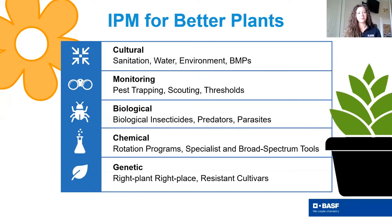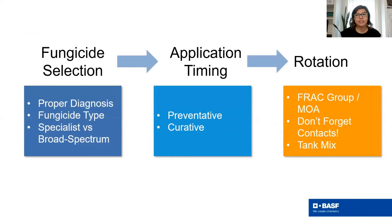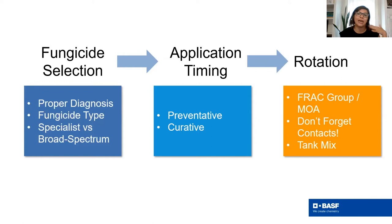Today we focus on chemical control and sanitation. Fungicide selection begins and ends with a diagnosis — pick the right fungicide with activity on the pathogen you're targeting. Factor in application timing: are we being preventative or curative? For some diseases there may be no curative option, and that's when it's time to cut your losses. Finally, build out your rotations paying close attention to FRAC groups or mode of action, not just trade names. Consider contact fungicides and tank mixes for robust resistance management.